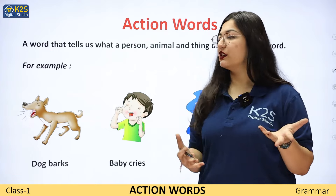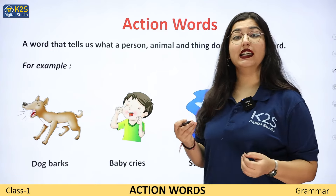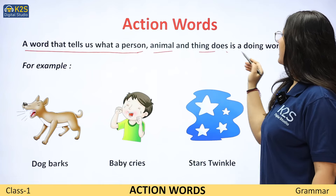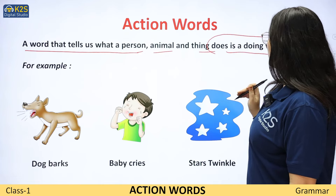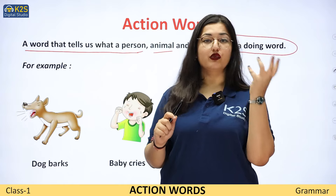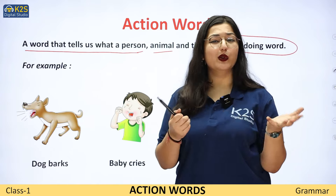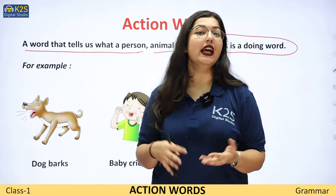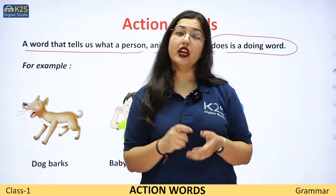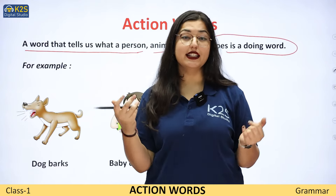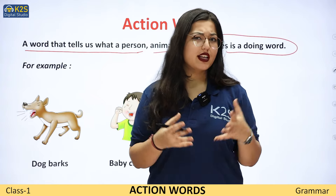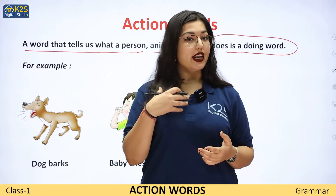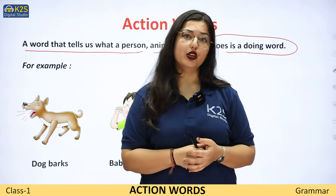Aap notebook mein likh sakte ho ki action words exactly hota kya hai: 'A word that tells us about a person, animal, thing does, is doing.' Koi bhi ek aisa word jo hume batata hai ki koi bhi noun kaunsa action kar rha hai, us word ko hum bolte hai action word. For example: Teacher is teaching. Teacher ek noun hai, aur teach ek action word ho gya.